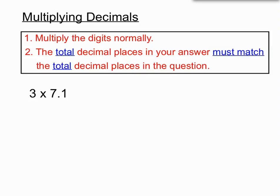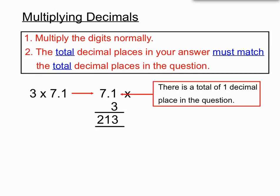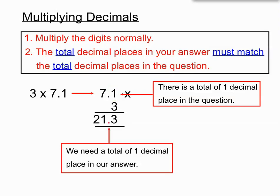Let's look at an example: 3 times 7.1. We write it out and multiply normally — 3 times 1 is 3, and 3 times 7 is 21. Then to decide where the decimal point goes in our answer, we count: there is a total of one decimal place in the question. So there must be one decimal place in the answer, placing the decimal point between the 1 and the 3, giving 21.3.